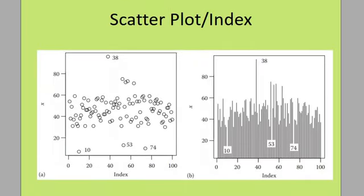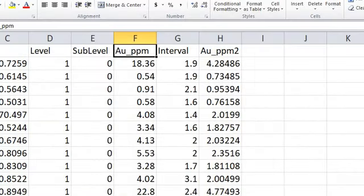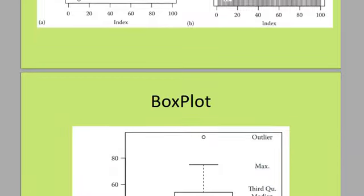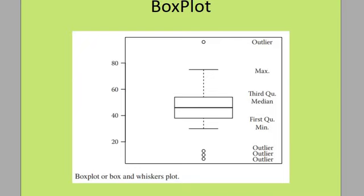Example graphs include the scatter plot, the index plot, the lines plot, and the box-and-whisker plot. Unfortunately some of these don't appear well on the screen, but those are the main graph types used in exploratory data analysis.